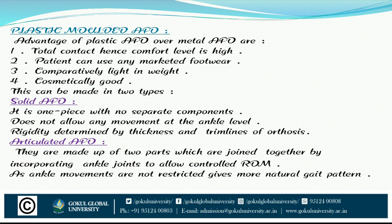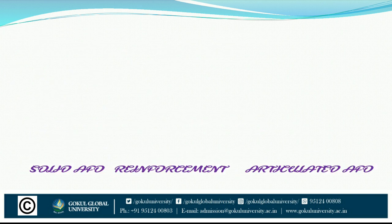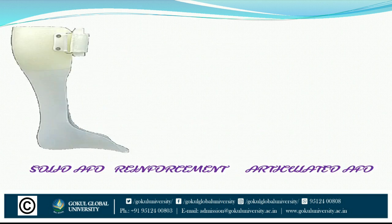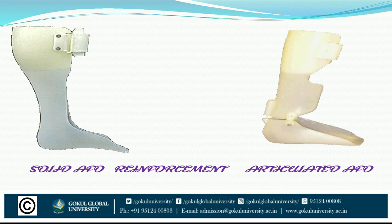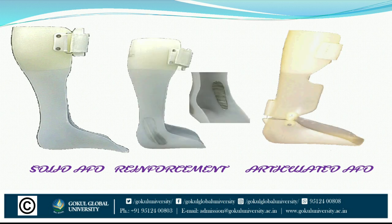Articulated AFO is made up of two parts joined together by an incompressive ankle joint to allow a controlled range of motion. As ankle movements are not restricted, it gives a more natural gait pattern. Here are pictures of solid AFO, articulated AFO, and reinforcement AFO.